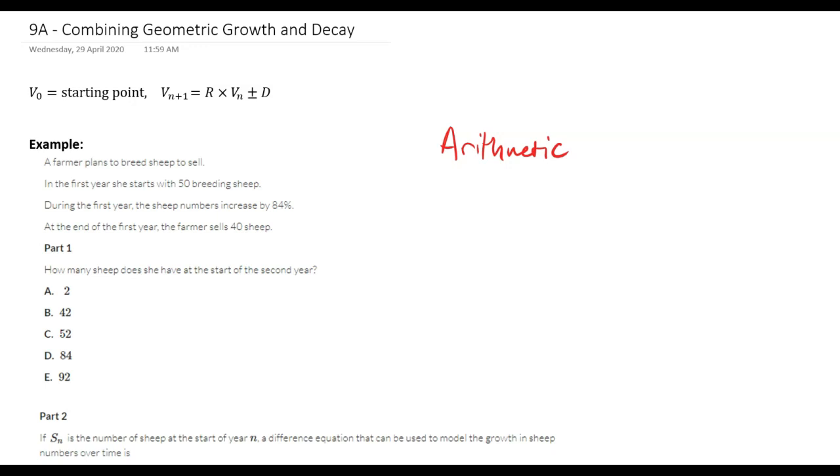For example, the arithmetic sequence would go up or down by a common difference. For geometric, it would be multiplied by a common ratio every time.